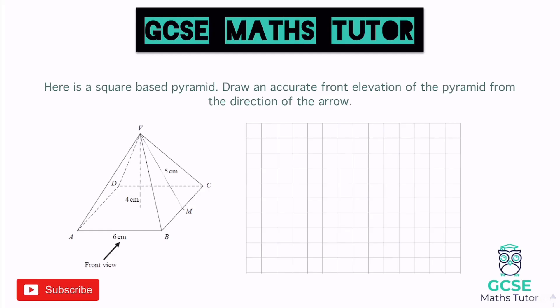Let's look at the first question. Here's a square base pyramid and it wants us to draw an accurate front elevation from the direction of the arrow. There are three types of elevations: from the front, from the side, and the plan view. Here it says the front is in the direction of the arrow shown, facing that way toward the pyramid.